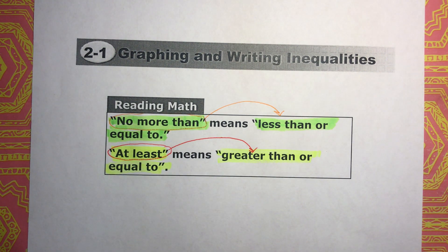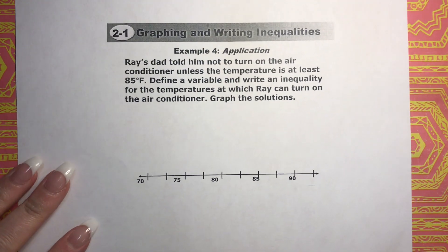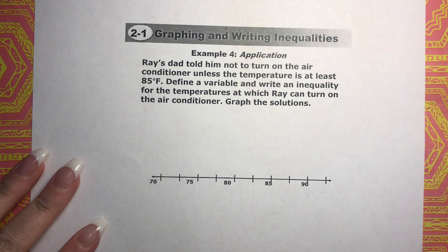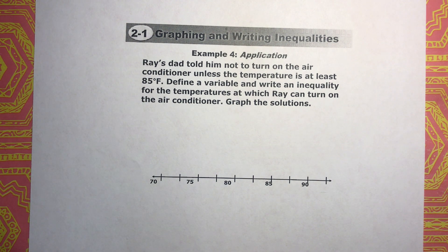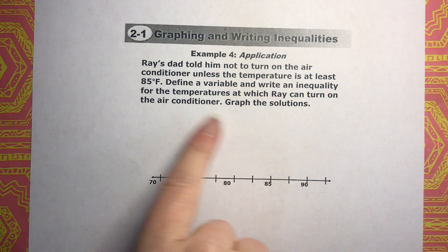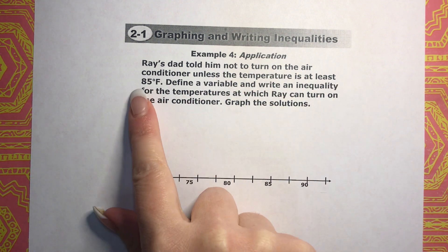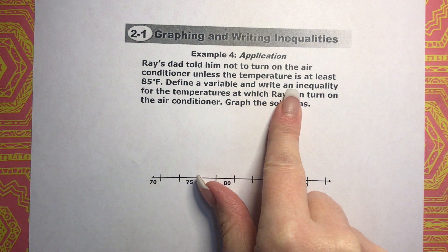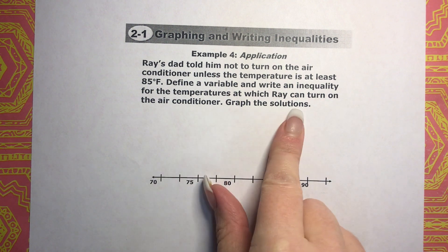Let's go ahead and look at our first Example 4. We're going to highlight key information and keywords. I'll read through it first — it just takes me a couple of times to read story problems; I read through every story problem at least twice. It says: Ray's dad told him not to turn on the air conditioner unless the temperature is at least 85 degrees. Define a variable and write an inequality for the temperature at which Ray can turn on the air conditioner, and then graph the solutions.